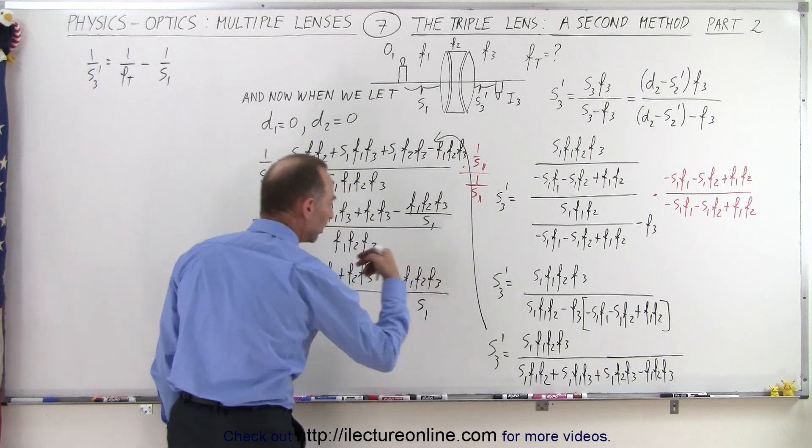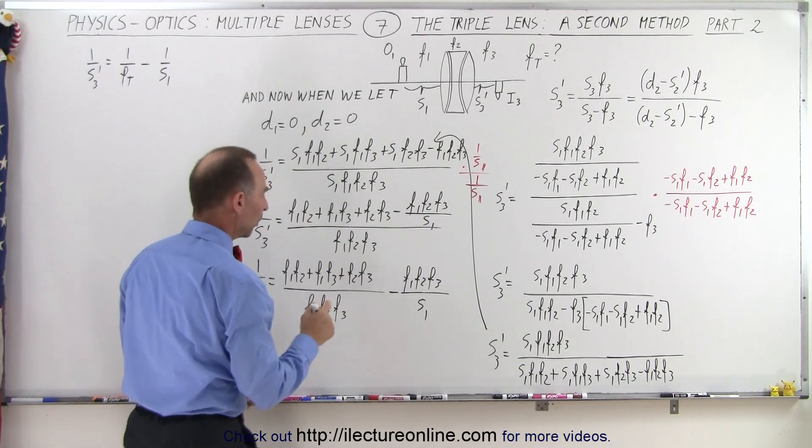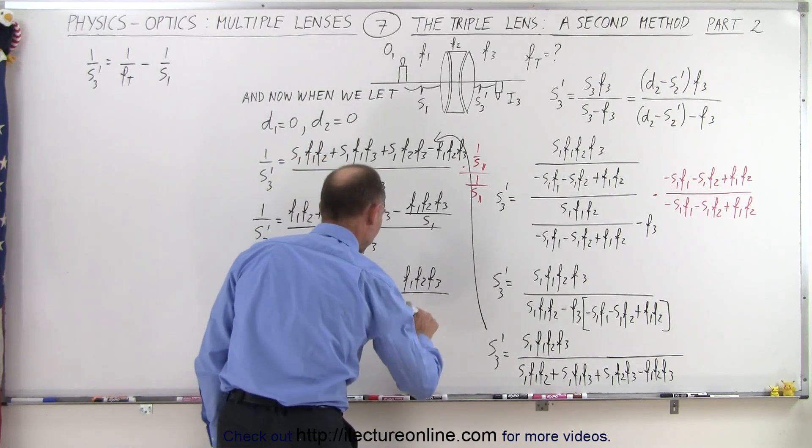And then minus we have here f1 f2 f3 divided by s1. Of course we can then put the s1 in the denominator, but that's not the only thing because we still have this denominator, so it will be s1 times f1 f2 f3. Got to be careful about the algebra.